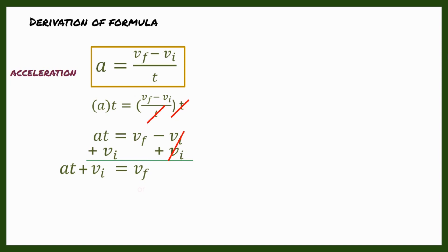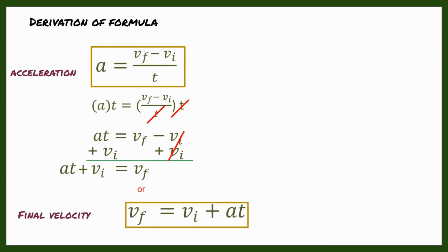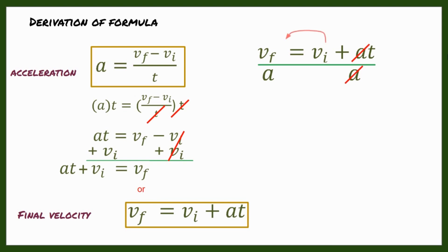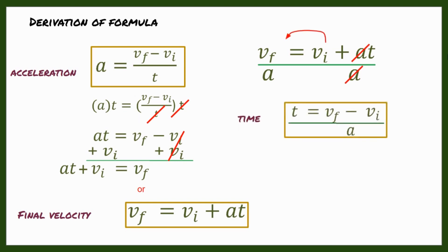What about the formula for time? Divide both sides by acceleration and cancel. Then transpose the initial and final velocity terms, resulting in a negative sign. So the formula for time is: t = (V_F − V_I) / A. Here are all three formulas for acceleration, final velocity, and time.